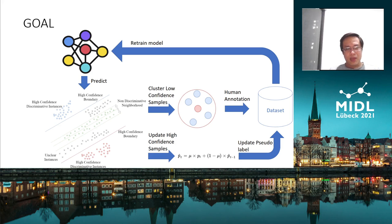Our method starts with a model trained on the current dataset. That model is then used to predict the confidence score on the unlabeled dataset. Our method focuses only on two regions: the high confidence region and the low confidence region.